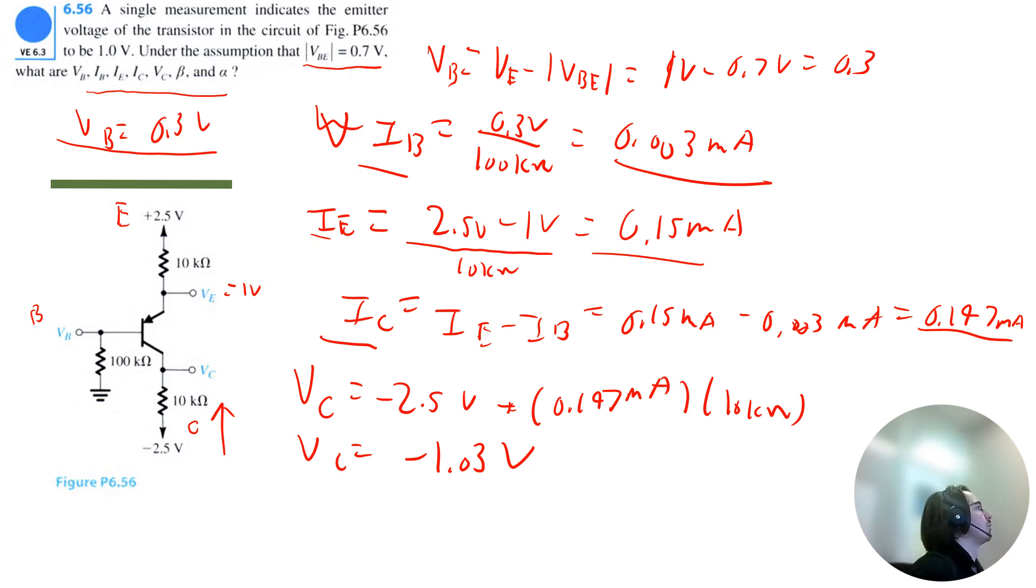Okay, now I want to stop the solving real quick to point out that the EBJ, we're going from our base, which is 0.3 volts, to emitter, which is 1 volt. So the EBJ is reverse biased. The CBJ is going from 0.3 volts to negative 1.03 volts. So the CBJ is forward biased, which means that this transistor is operating in the active region.